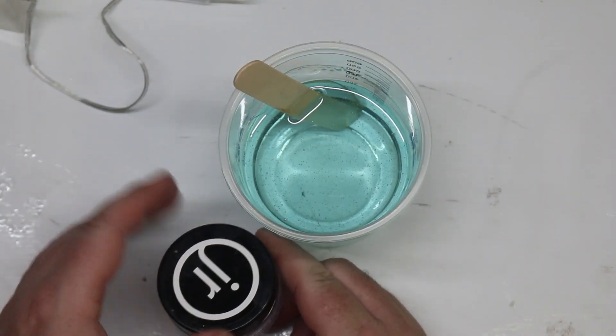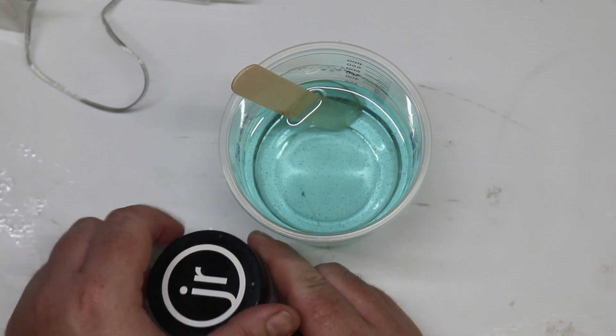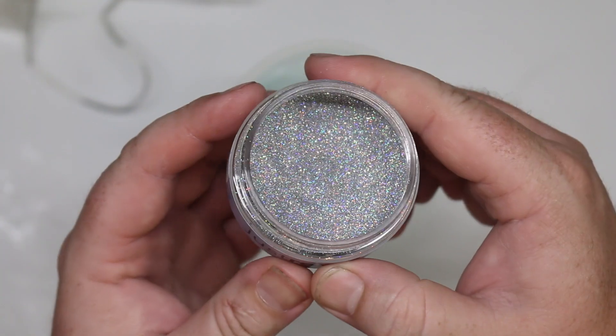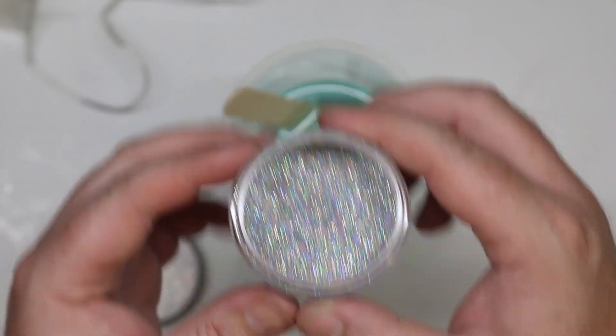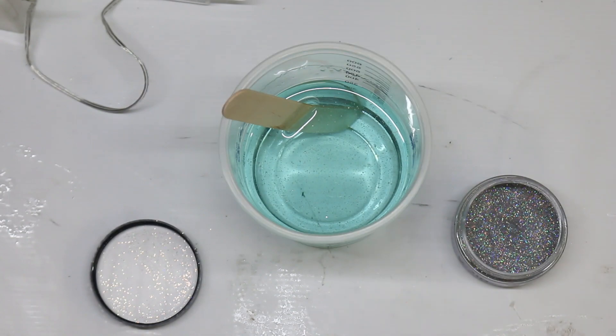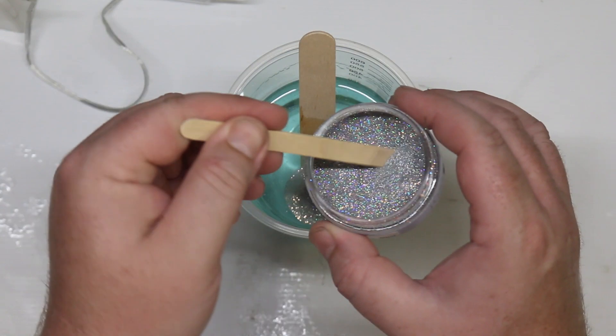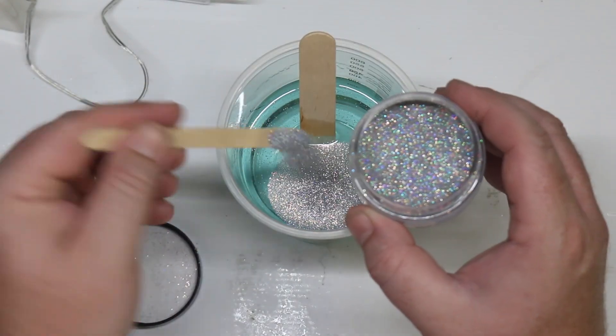Now if you wanted to you could leave it with just the blue, but I want to jazz it up a little bit. And I want to use this glitter, this is the silver halo. I quite like it, it's got like a prism look to it. I will be honest, I'm not sure how much of this to put in. I'm just going to put a few spoonfuls in then give it a mix up and we'll see how it looks.